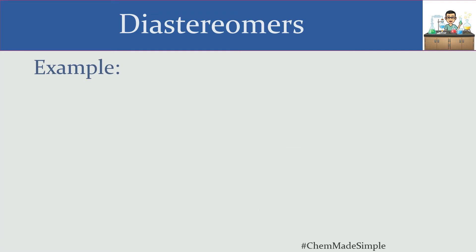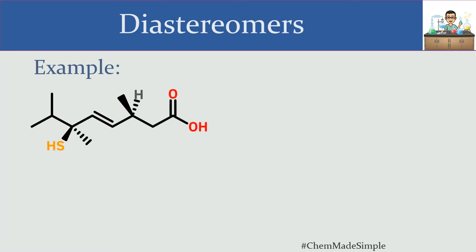An example molecule might look like this. There are three key features of this molecule that may make it unique. For example, there is a chiral center here with four different substituents attached, another chiral center over here, and also a pi bond — and that pi bond could possibly create additional points of uniqueness.